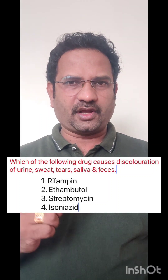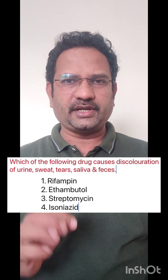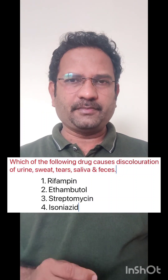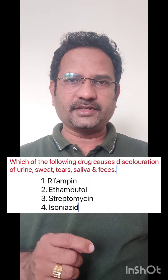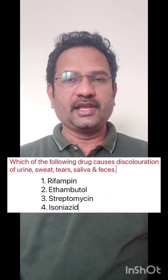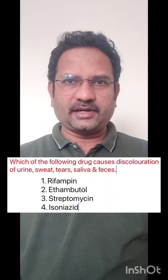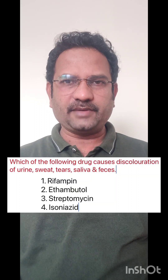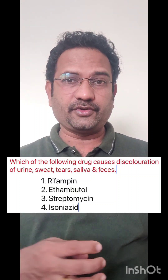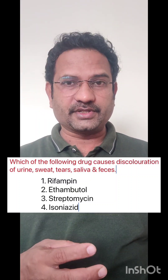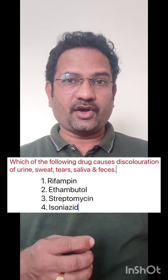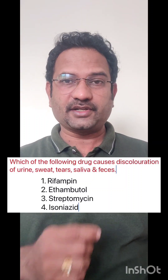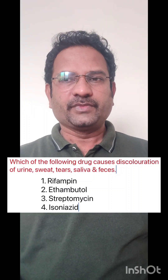All the choice drugs are used to treat tuberculosis. Among them, rifampin causes discoloration of body secretions. The reason is the drug itself contains reddish orange color. It has got very good distribution into body fluids, hence it causes orange discoloration of all the body fluids.